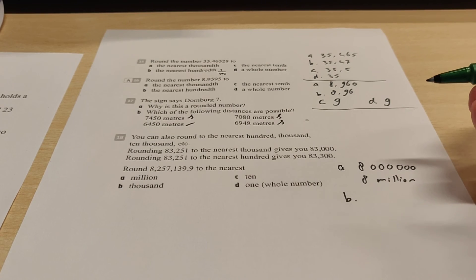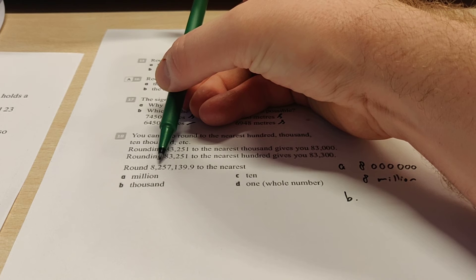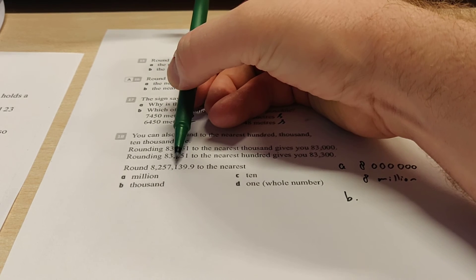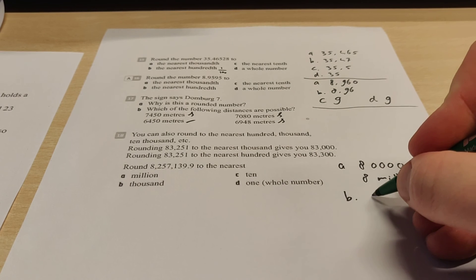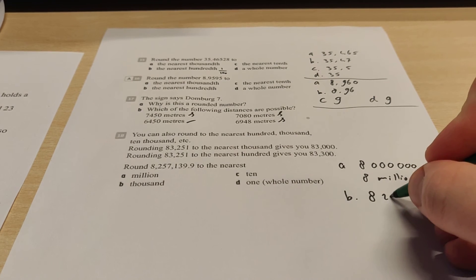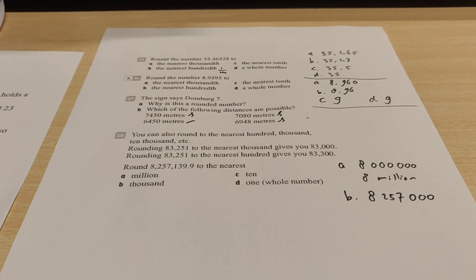Exercise B. Now we have to round it off to thousands. That means here we have 8,257,000. So then we look at this one. So that means you round it off downwards. So this becomes 8,257,000. And then we rounded it off to the nearest thousand.